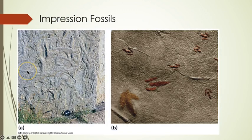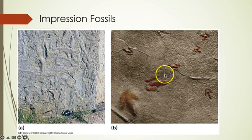Impression fossils left by animals, like burrow tracks or footprint impressions, or inanimate objects, like a piece of wood being dragged along the bottom of stream deposits, give us additional clues about past environmental conditions.